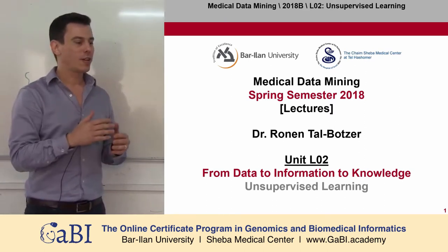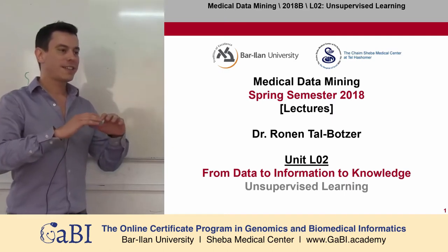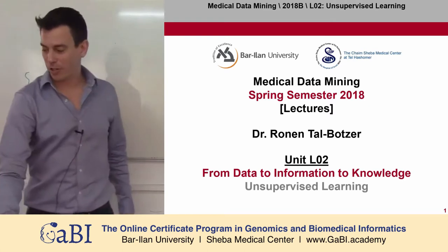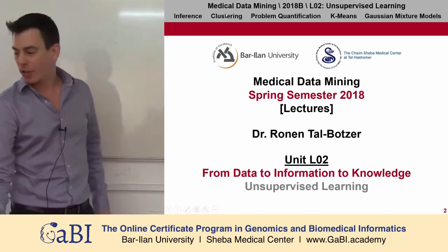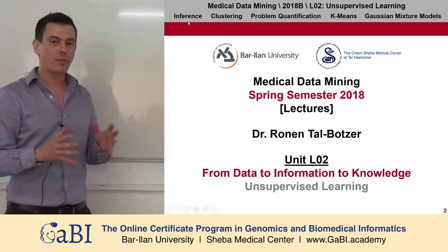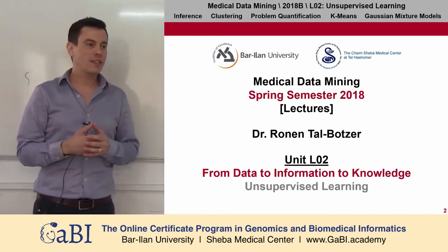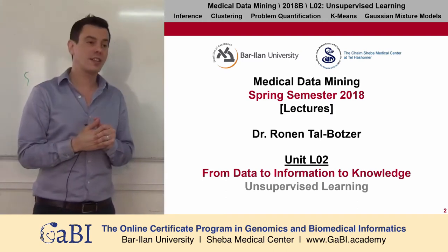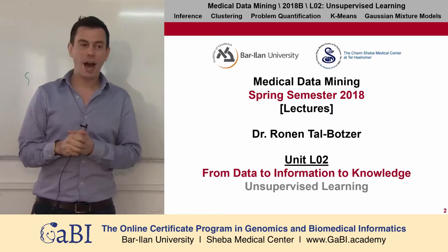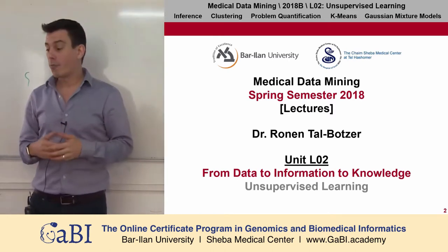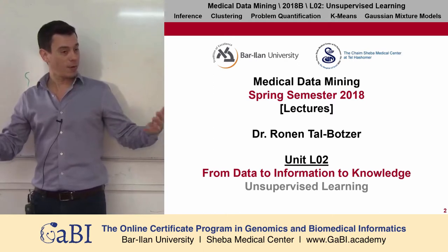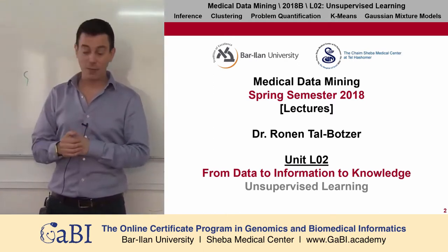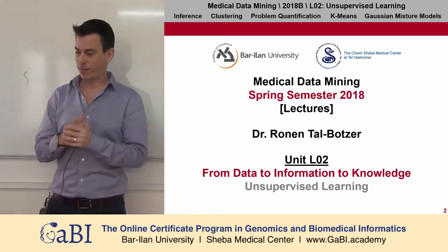It's one type of machine learning that we call the process of moving from data to information to knowledge. We will first begin talking about inference, and then we will discuss one of the main problems in unsupervised machine learning, which is clustering. We will discuss how we quantify a problem, and then two very nice algorithms: k-means and Gaussian mixture models.